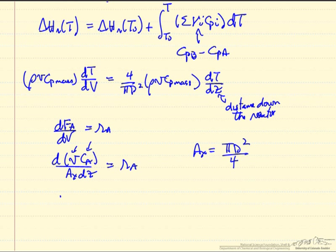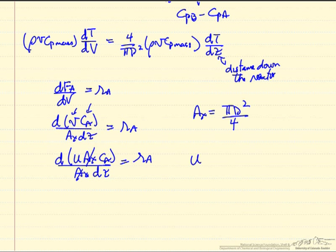And we could replace the volumetric flow rate with a velocity and a cross sectional area. So the cross sectional area drops out of the mass balance equation. But in general, U is a function of Z. So we cannot bring the velocity outside of the derivative.